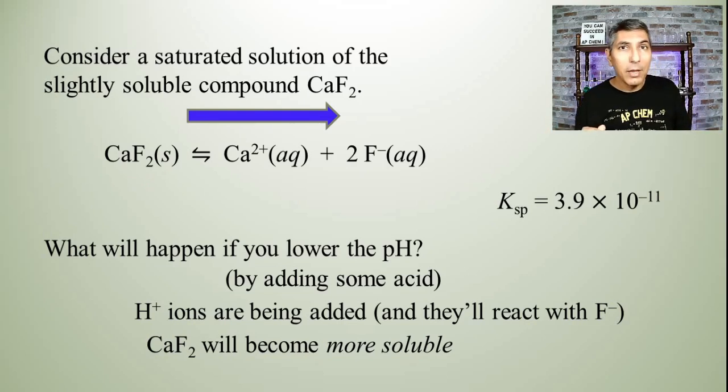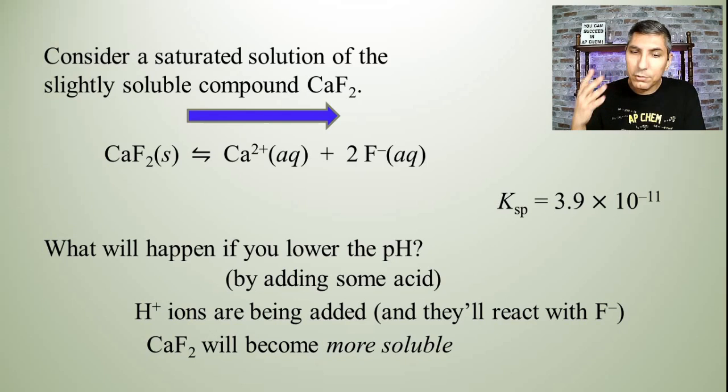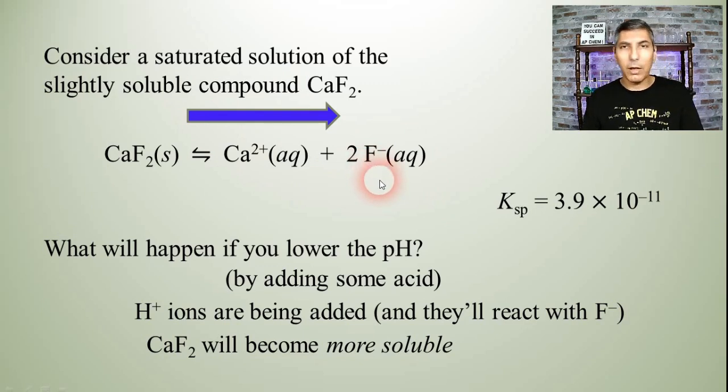Now, on the AP exam, they're not going to have you carry out calculations for this. This is not something that they want you to calculate. But they are going to expect you to be able to answer questions kind of like what we saw here in this presentation. And so, think about that. Slightly soluble hydroxides and other ionic compounds, especially those that have the conjugate bases of weak acids like fluoride or perhaps nitrite or some other anions in there that you can think about.